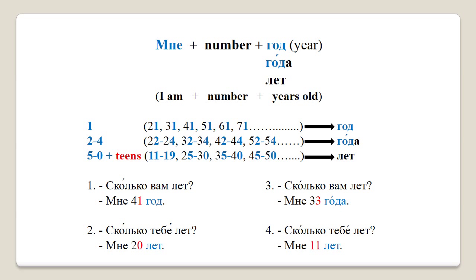мне is a form of я but in what we call the dative case, and it literally translates as 'to me.' мне will be followed by the number of years and then either год, года, or лет. год stands for 'year,' года is a slightly different form of год, and лет is an irregular plural form of 'years.' If the number either is one or ends in one, we finish with год. If the number is two, three, four, or ends in two, three, or four, we finish with года.